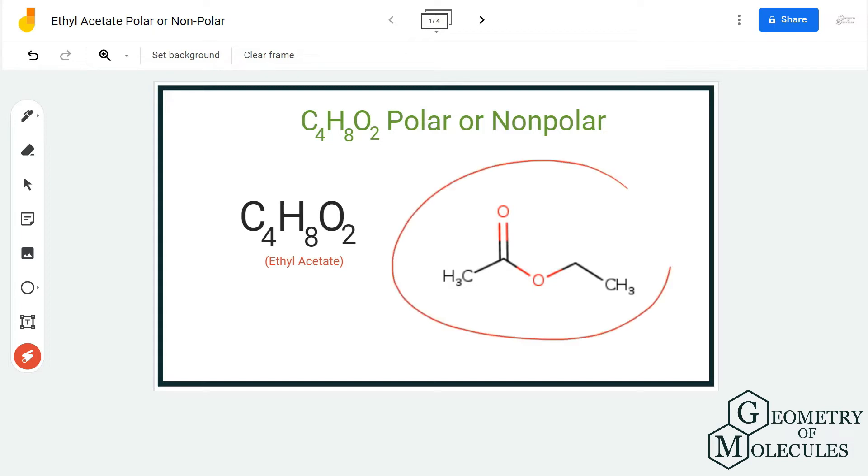going to look at its Lewis structure. Here is the Lewis structure of this molecule. You can see that there are two methyl groups and a carbon atom bonding with two oxygen atoms.